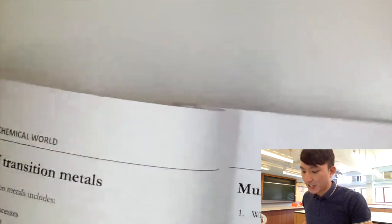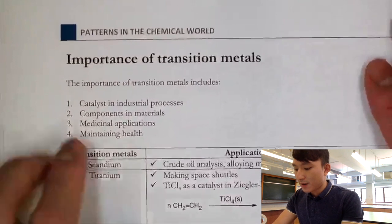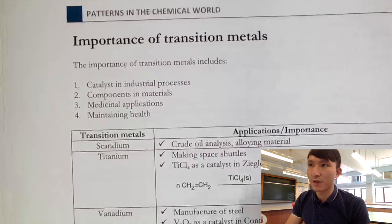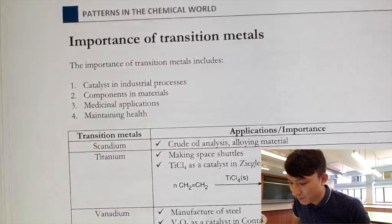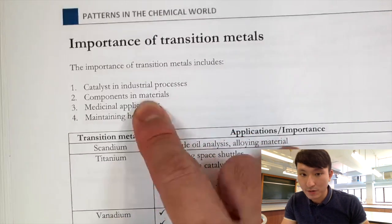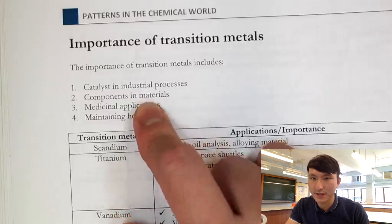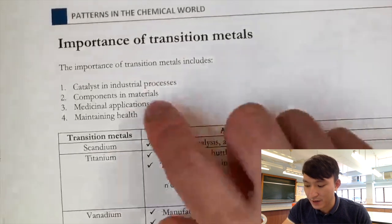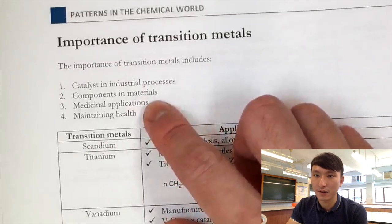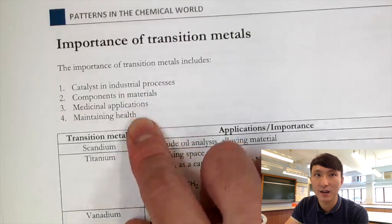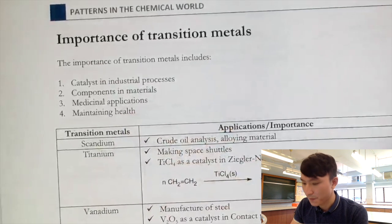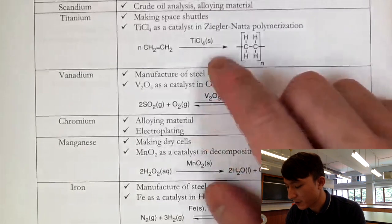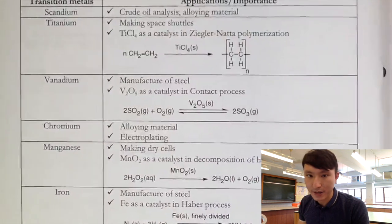The importance of transition metals: most importantly, they act as catalysts in industrial processes. They are also useful as structural materials due to their high melting points. They have medicinal applications — some radioactive isotopes can be used to treat cancer. And in biology, some transition metal ions serve as coenzymes. These are some examples of catalysts and applications you should read and learn.